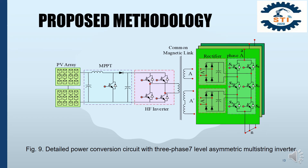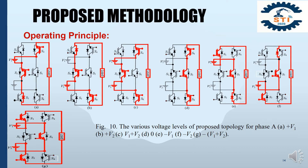The proposed inverter uses six switching devices for generating a 7-level output voltage waveform. Here is the operating principle of the 7-level inverter, as displayed in Figure 10. The red line indicates the direction of current. If we want to generate V1 plus V2 level, then we have to give the firing pulse to S2, S4, and S6 switching devices, which is shown in Figure 3. The other voltage levels can be generated in the same way.